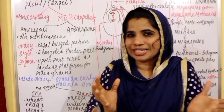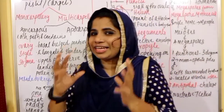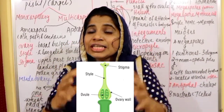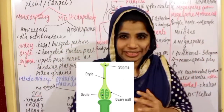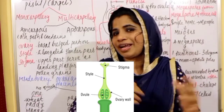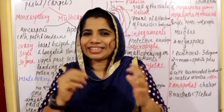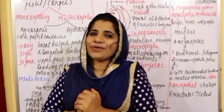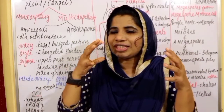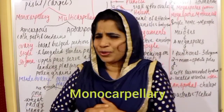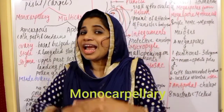The Gynoecium is composed of carpels or pistils. The individual units of the Gynoecium are carpels. A Gynoecium with one carpel is monocarpellary.